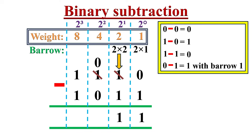We must always remember this when doing binary subtraction. Now let's move to the next column — the 4's column. Here we have 0 minus 0, which equals 0. Now we move to the 8's column. Here it is 1 minus 1, which equals 0. So after the subtraction, we get 0011 as the result.